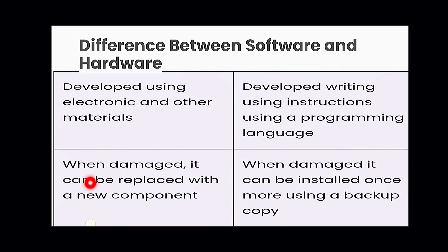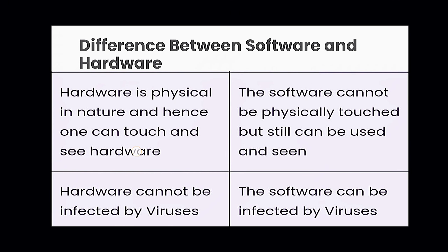When hardware is damaged, it can be replaced with a new component — first you try to repair it, and if it can't be repaired, you replace it. When software is damaged, it can be installed once more using a backup copy. If hardware is damaged, you go towards repair and then replacement; if software gets errors or viruses, you reinstall it using its backup copy.